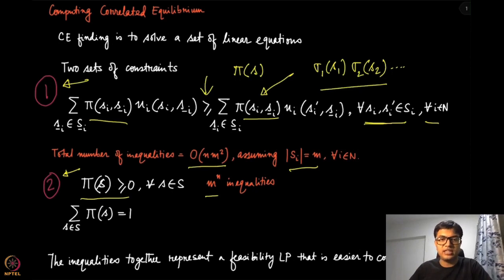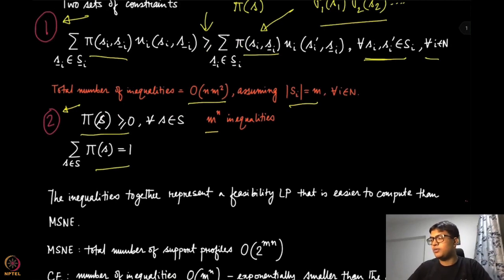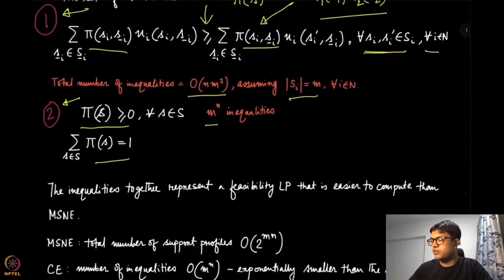The final condition — summing to one — is just one equality. Together, these inequalities represent a feasibility LP. Just as with mixed strategy Nash equilibrium, we write down conditions and solve a feasibility LP, meaning the objective function is a constant and we only care about satisfying the constraints. Solving this feasibility LP yields one correlated equilibrium.